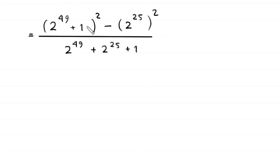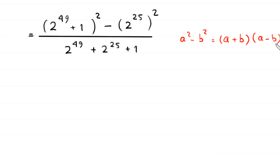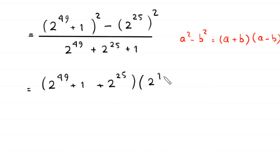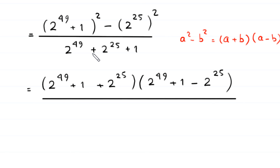Now, in the numerator we have a difference of two squares. By using the algebraic identity a squared minus b squared equals a plus b times a minus b, the numerator becomes 2 to the power 49 plus 1 plus 2 to the power 25, times 2 to the power 49 plus 1 minus 2 to the power 25, all divided by the denominator 2 to the power 49 plus 2 to the power 25 plus 1.